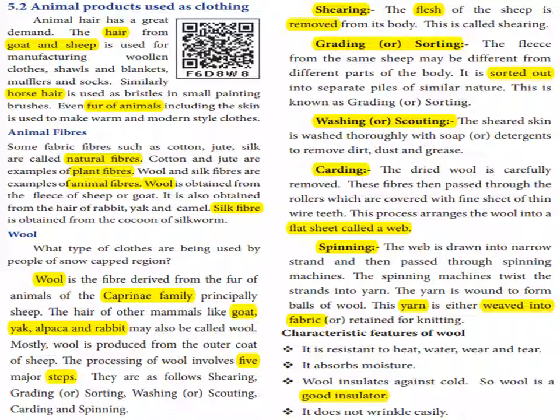The web is drawn into narrow strands and then passed through a spinning machine. The spinning machine twists the strands into a yarn. The yarn is wound to form balls of wool.